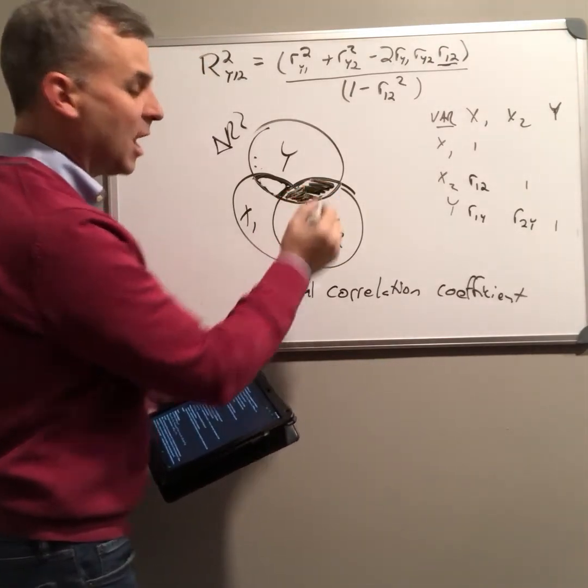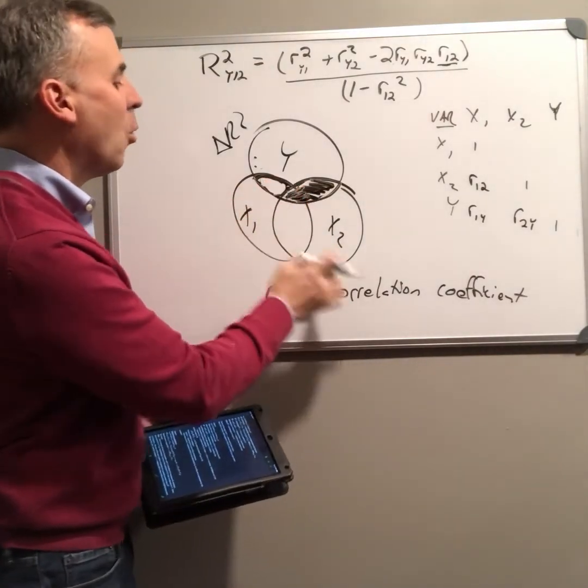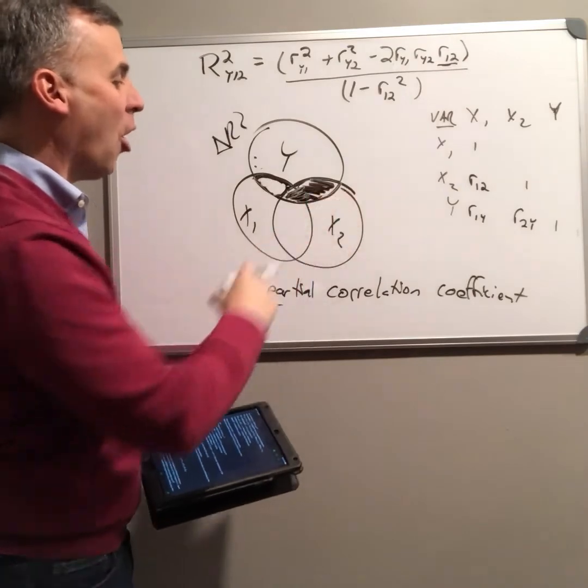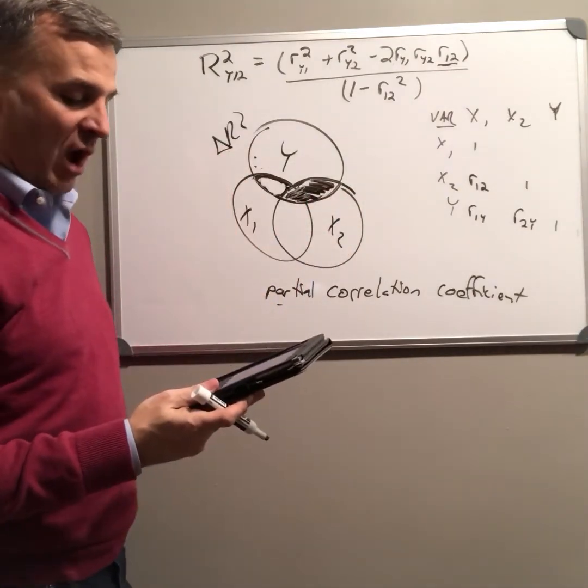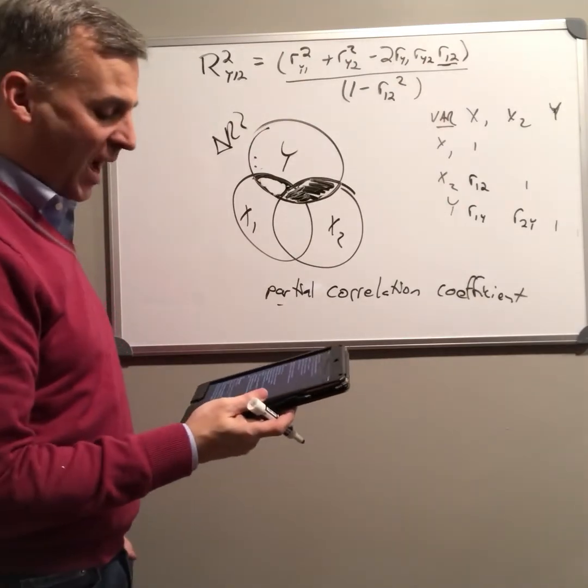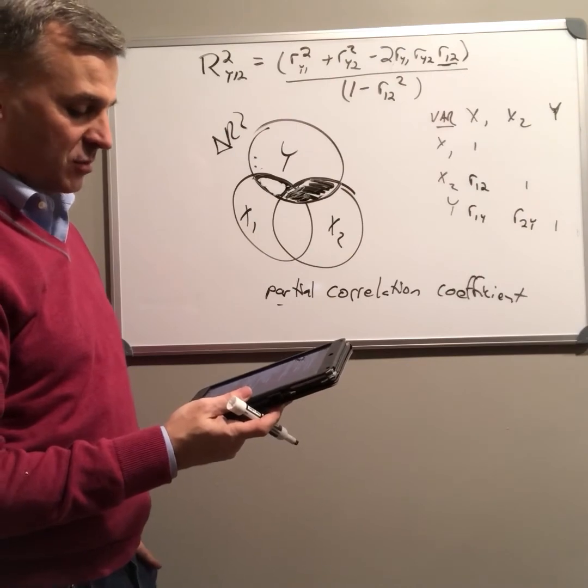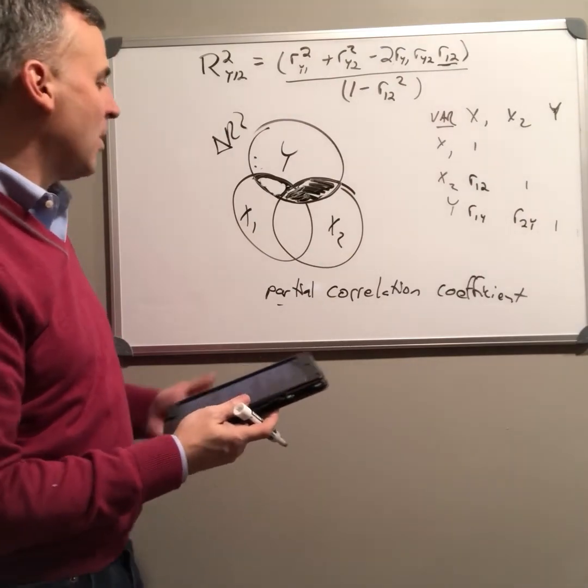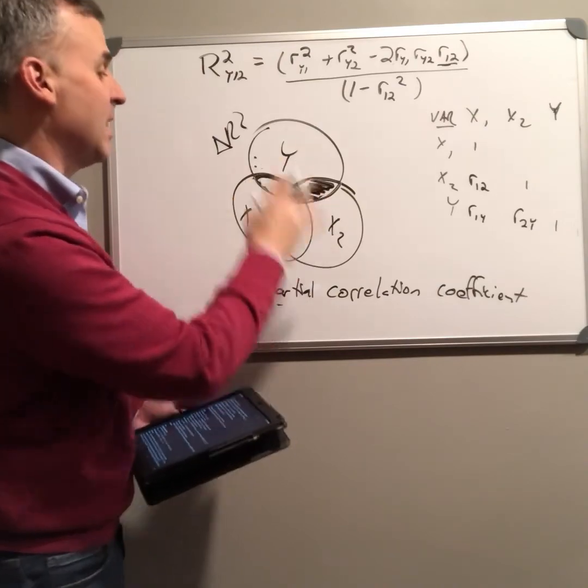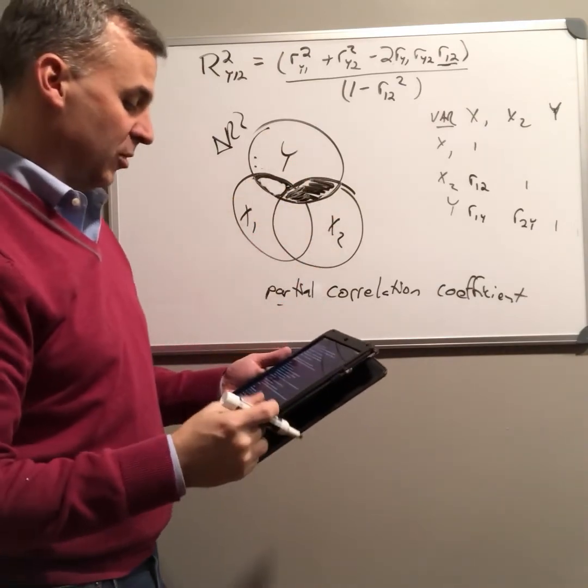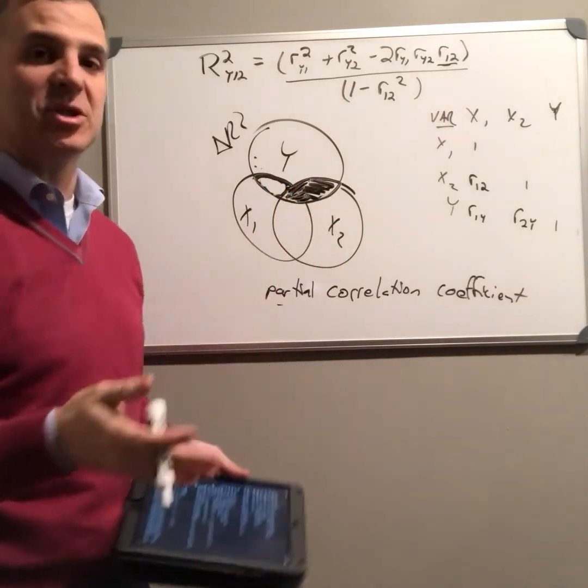The partial correlation coefficient ignores the contribution of the other variable. So this is saying, what is the contribution of this variable ignoring the other one? So how much of the variance in y is not estimated anywhere else? And how much of the variance in y not estimated by this other variable is estimated by this variable? So now this gets to the partial correlation coefficient.